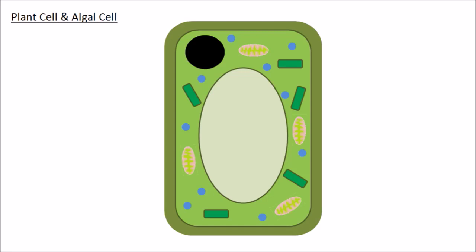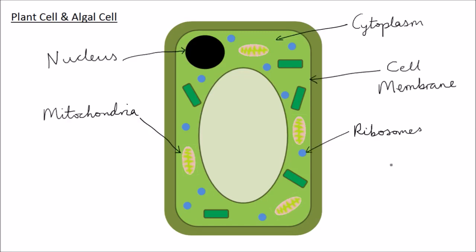Here are those things that we also find in animal cells. Like we find in an animal cell, plant cells also have a nucleus, mitochondria, cytoplasm, a cell membrane, and ribosomes, and they carry out the same functions as they would in an animal cell.